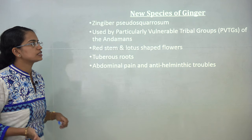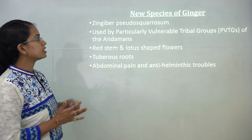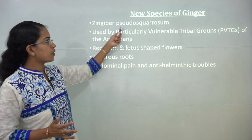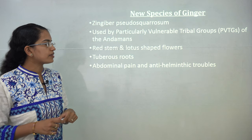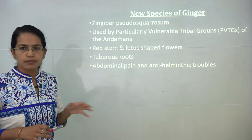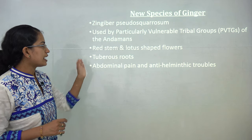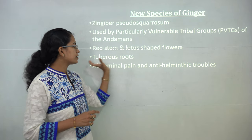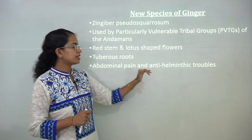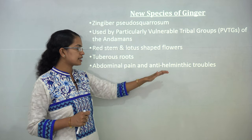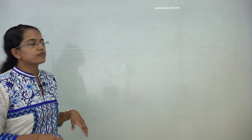A new species of ginger has been discovered, known as Zingiber pseudococcinum. It was discovered by one of the vulnerable tribal groups of the Andaman islands. It has a red stem, lotus-shaped flower, and tuberous roots, and is used to treat helminthic troubles and abdominal pain.